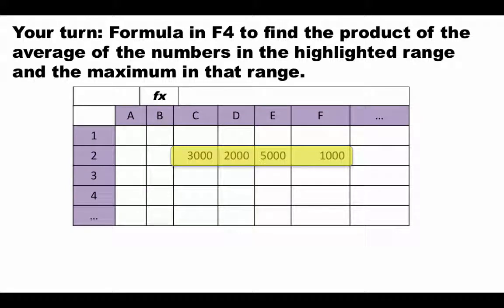Write a formula in F4 to find the product of the average of the numbers in the highlighted range and the maximum in that range. In other words, find the average of the numbers, find the maximum of the numbers, and multiply these two. So pause the video, commit to a solution based on what you have already learned, and then continue the video to see if your solution was correct.